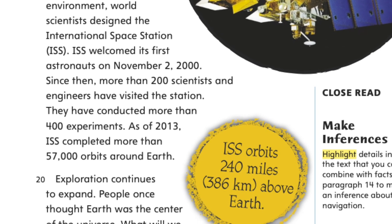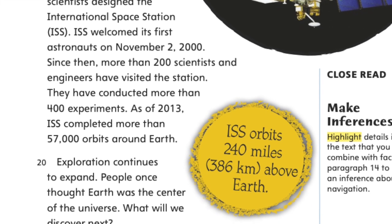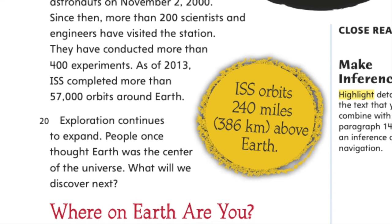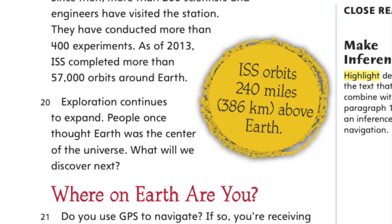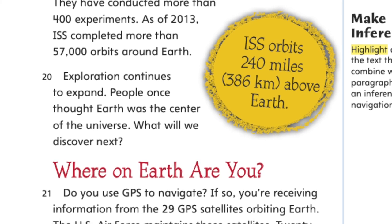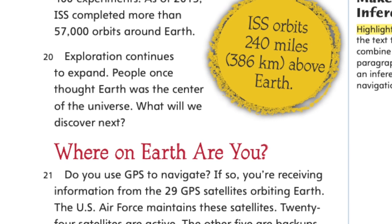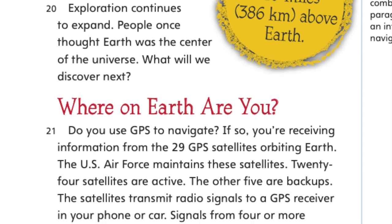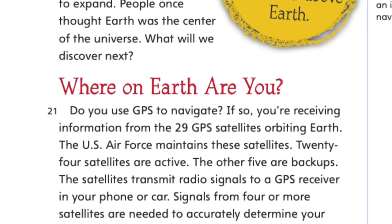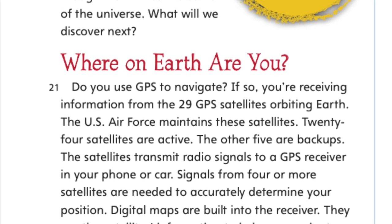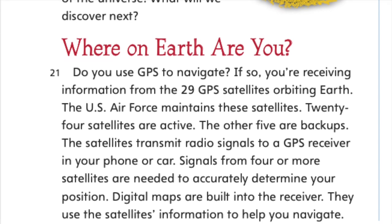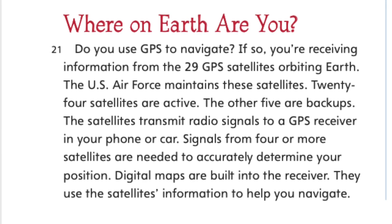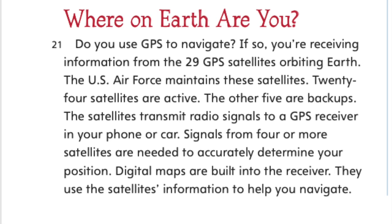Exploration continues to expand. People once thought Earth was the center of the universe. What will we discover next? Where on Earth are you? Do you use GPS to navigate? If so, you're receiving information from the 29 GPS satellites orbiting Earth. The U.S. Air Force maintains these satellites — 24 are active and the other five are backups. The satellites transmit radio signals to a GPS receiver in your phone or car. Signals from four or more satellites are needed to accurately determine your position. Digital maps are built into the receiver and use the satellite's information to help you navigate.